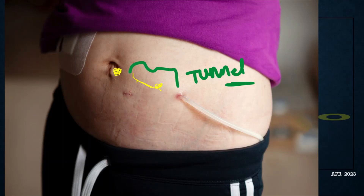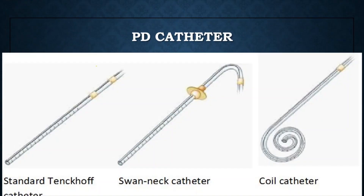The PD catheter has two cuffs outside the peritoneal portion, placed subcutaneously for adherence, made of Dacron background material. The catheter itself is made of silicone. There are various designs including straight and coiled catheters. The area from the exit site to the peritoneal entry is called the tunnel.